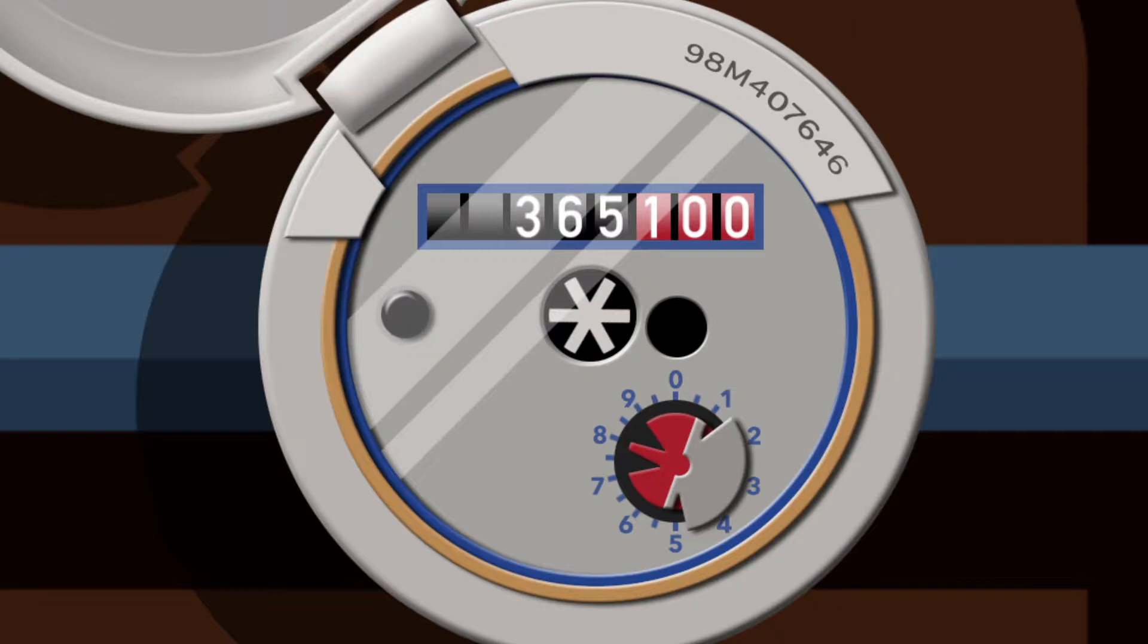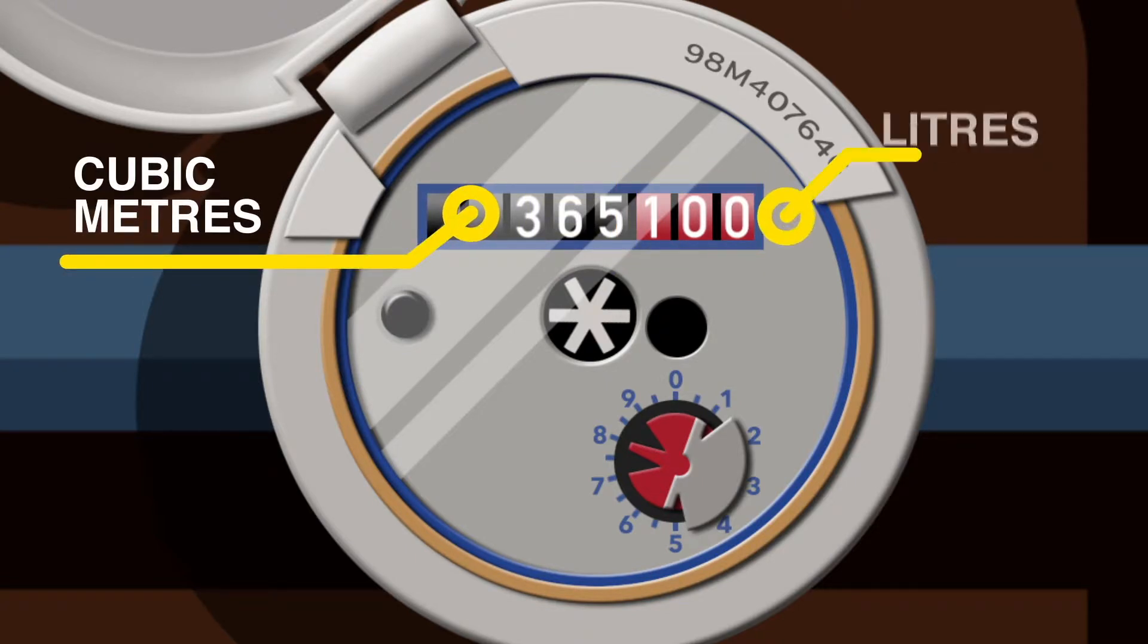You'll need to take a reading noting both black and red numbers. On this meter the reading is 365.100. That's 365 cubic metres and 100 litres.